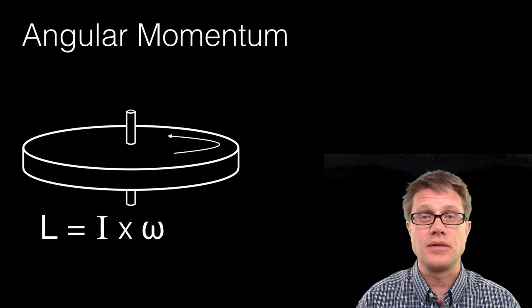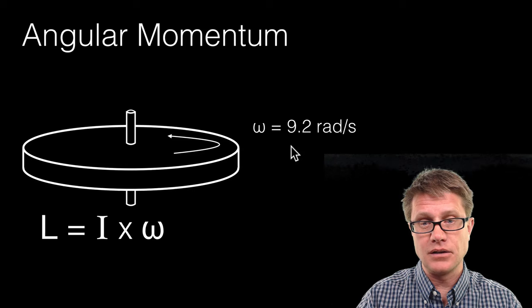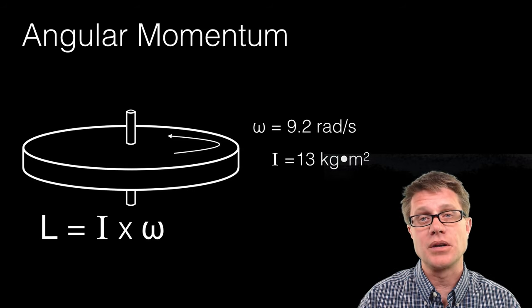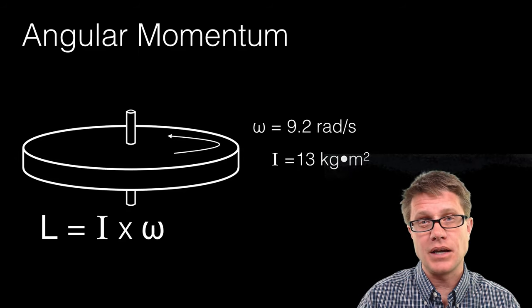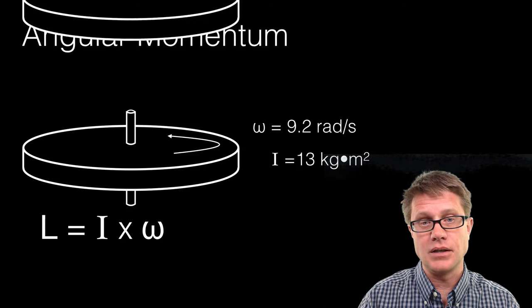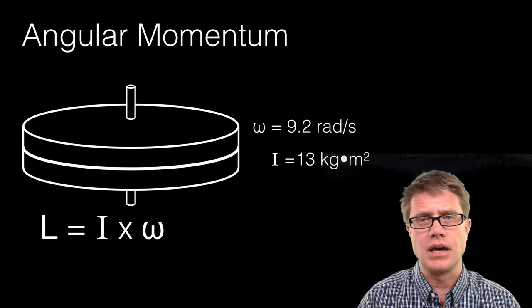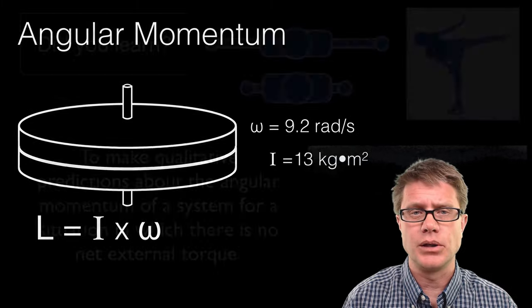We could do the same thing if we have an extended object like this. So let us say we have a rotating disk. It has got an angular velocity of 9.2 radians per second. Let us say it has a moment of inertia of 13 kilogram meters squared. And so let us say we take an identical disk as it is spinning and we drop it on it from above. What is going to happen to the angular velocity? Well try to solve this one. And I will put an answer down in the video description down below.